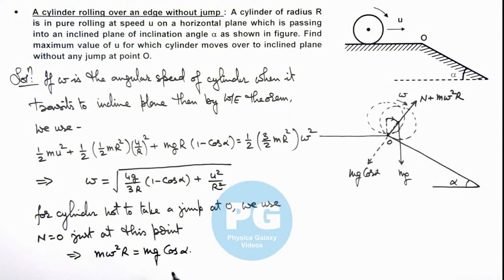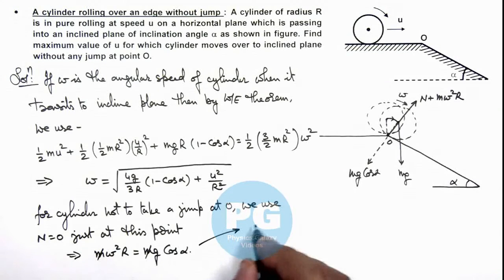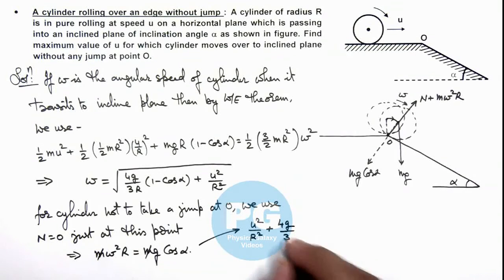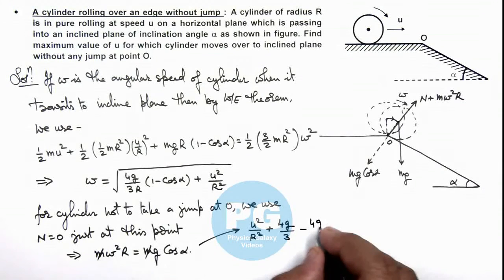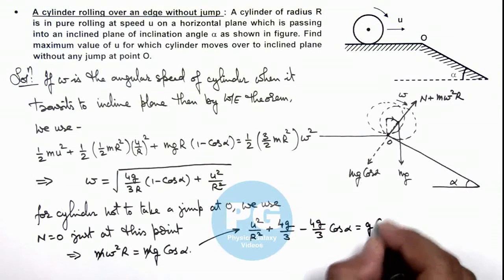And in this situation here we can write the value of omega squared when we substitute this gives us u squared by R squared, plus 4g by 3 minus 4g by 3 cos alpha, is equal to g cos alpha.